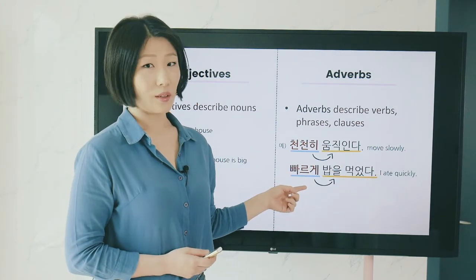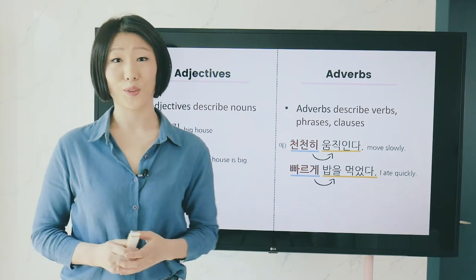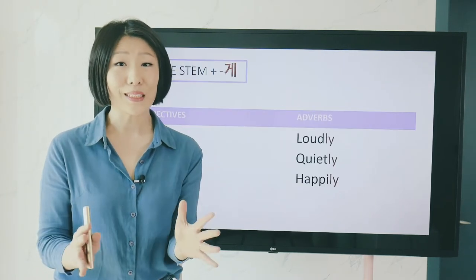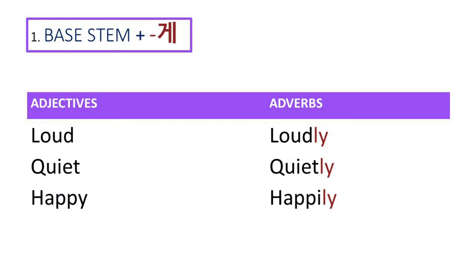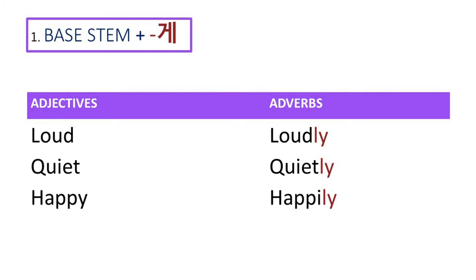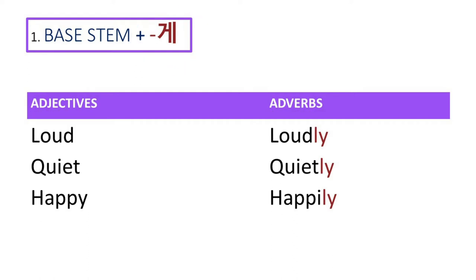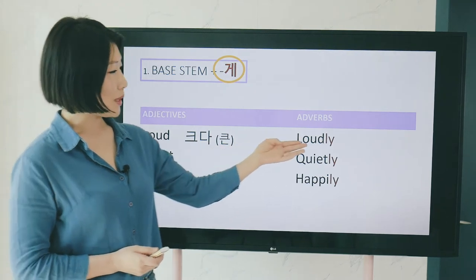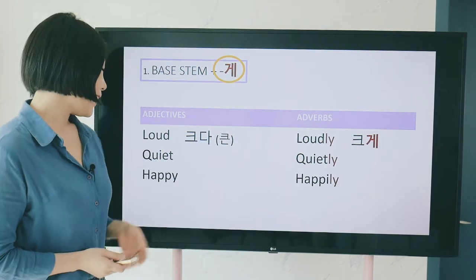Because adjectives and adverbs have a similar function, it is very easy to change an adjective to an adverb. In English, you just add -ly after the adjective — loud becomes loudly, quiet becomes quietly, happy becomes happily. Luckily, Korean has a similar method: attach 게 after the base stem.